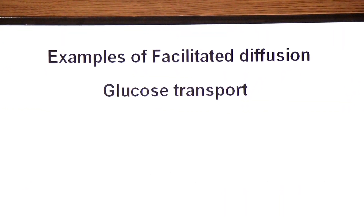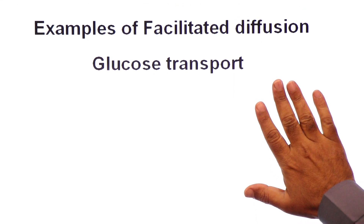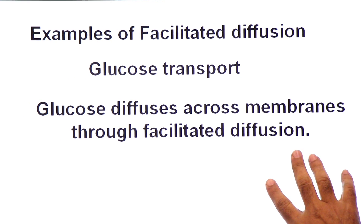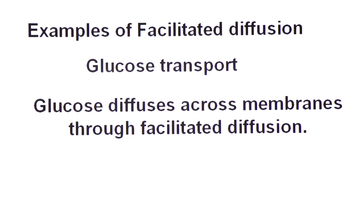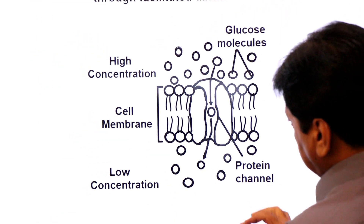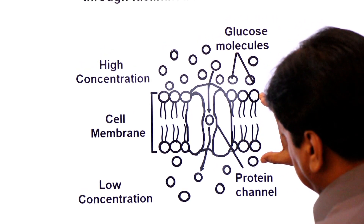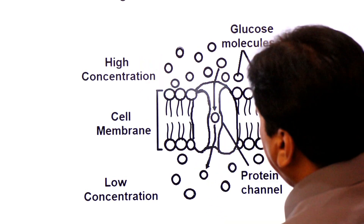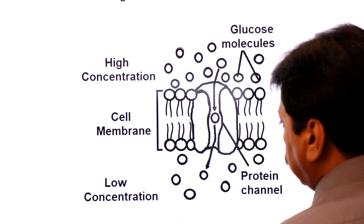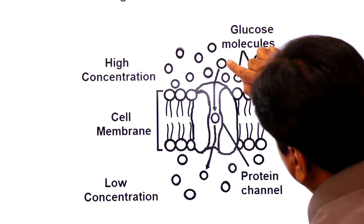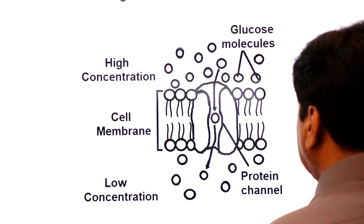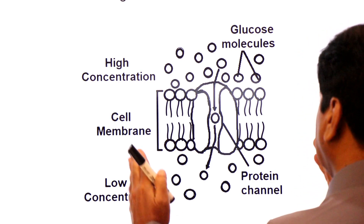Example of facilitated diffusion: glucose transport. When glucose crosses the plasma membrane, it uses facilitated diffusion — not simple diffusion. Note the diagram: outside the plasma membrane, glucose is in higher concentration; inside, glucose is in lower concentration. Glucose moves from the higher level to the lower level through a channel protein embedded in the plasma membrane.